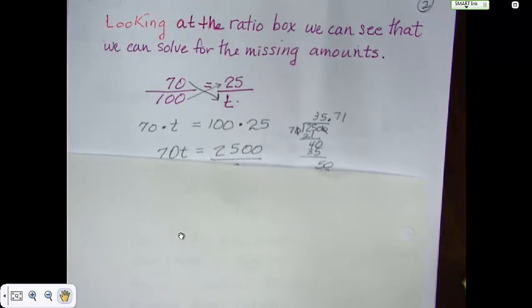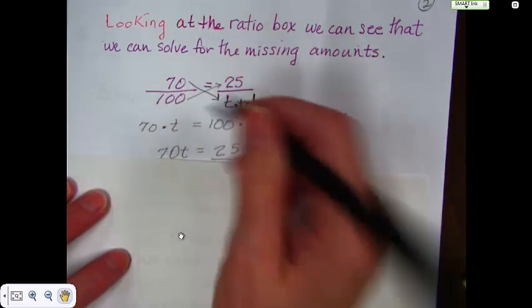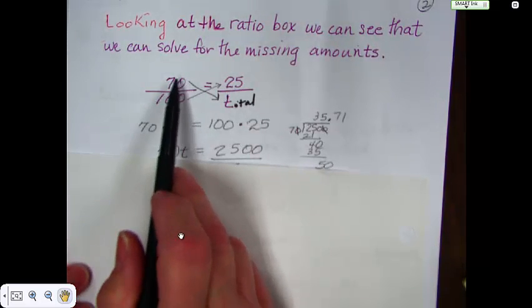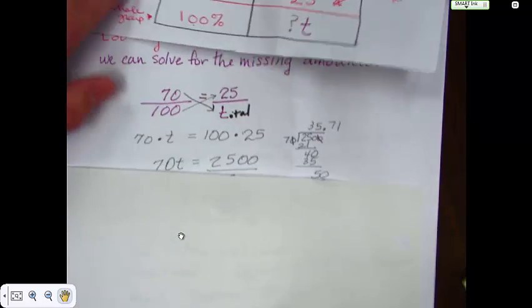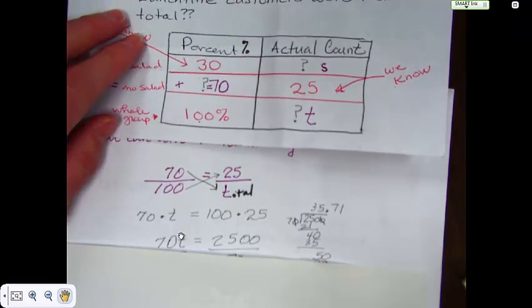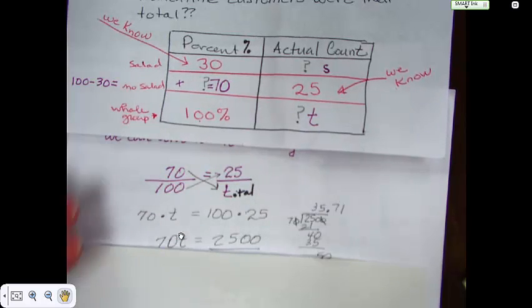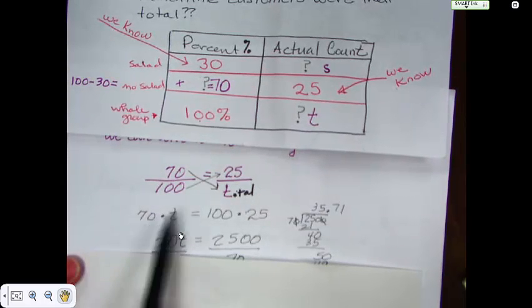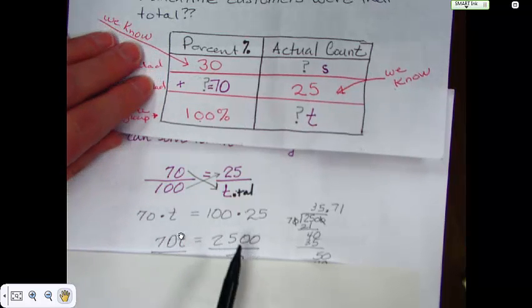So we look at the ratio box. We can see that we can solve for the total. This is total. Just by simply setting it up and cross-multiplying. So 70 over 100, and you can look at this too if you want to. 70 over 100 equals 25 over the total. So at this moment, we're ignoring this top part. And we go ahead and solve 70 times t equals 100 times 25, or 70t equals 2,500.